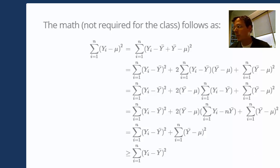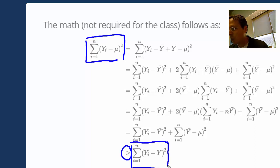Let's summarize. This function, for any value of mu, is larger than or equal to the specific case when we plug in y bar. Therefore, y bar has to be the unique minimizer of that equation.